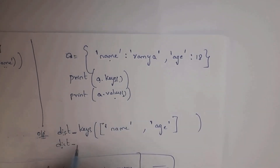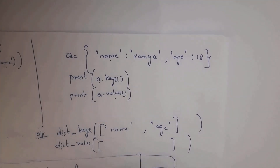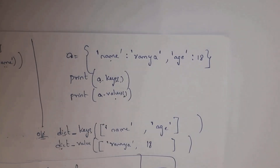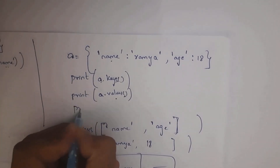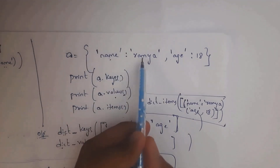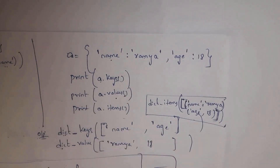If you want to print only values, use the values() method: print(a.values()) returns dict_values(['ramya', 18]). The keys() method displays only keys and the values() method displays only values, both in list form. There is also the items() method: print(a.items()) returns each item as a tuple inside a list — 'name':'ramya' is one item and 'age':18 is another.